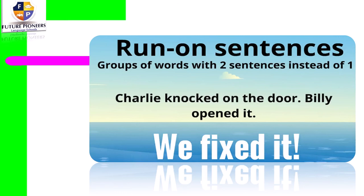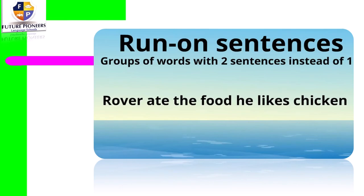So when I have two sentences with two subjects and two verbs, I'm going to divide them. I write the first sentence with a capital letter and add a full stop, then start the second sentence with a capital letter — like 'Billy' — and end my sentence with a full stop. Another example: 'River ate the food he likes chicken.' I have here two subjects and two verbs.